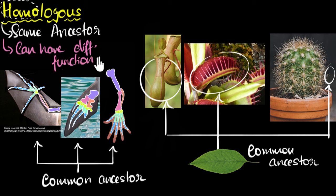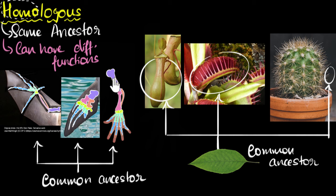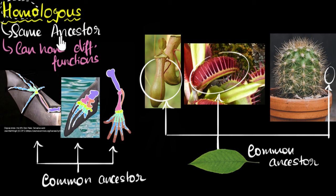They can also have same functions. For example, if you compare our hands with the hands of a chimpanzee, they're also homologous — bone structures will be very similar, and chimpanzees' hands also perform the same function as our hands. So homologous structures can perform same functions or different functions. What's important is that they have the same ancestry — homo, same ancestry.